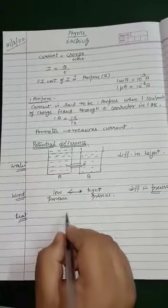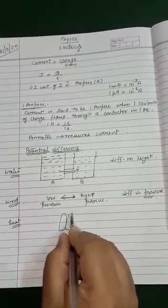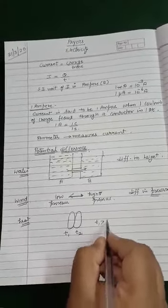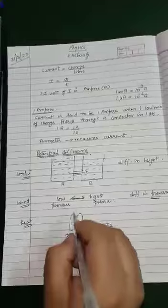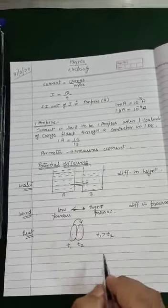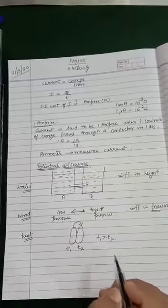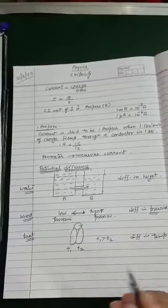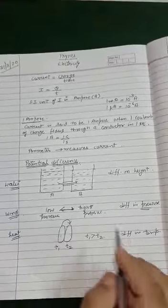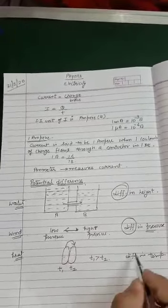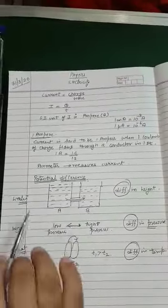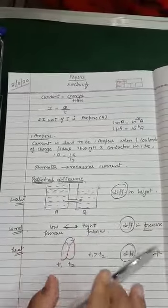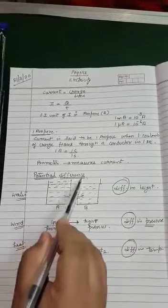If we talk about heat, suppose I have two bodies at different temperatures T1 and T2. If T1 is greater than T2 and both bodies are in contact, heat will flow by conduction from the body at higher temperature towards the body at lower temperature. So difference in temperature causes transfer of heat. In all three cases, difference in height, difference in pressure, and difference in temperature is the basic cause of movement. Similarly, potential difference is the cause of current.